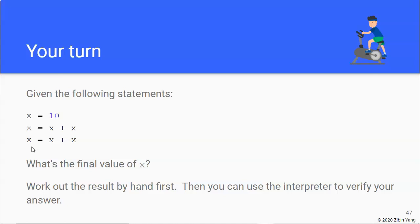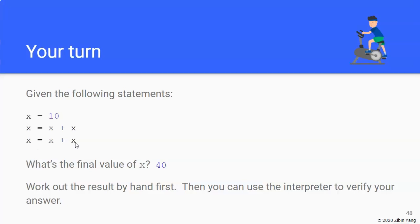And so if you do it correctly, you should see that the final value of x is 40. And the reason for that is at this line of code, x has the number 10, right? And on the second line, Python evaluates x plus x first, and x has the value of 10, and therefore we're doing 10 plus 10, which is 20, and 20 is assigned to x. So x has 20 after this line.